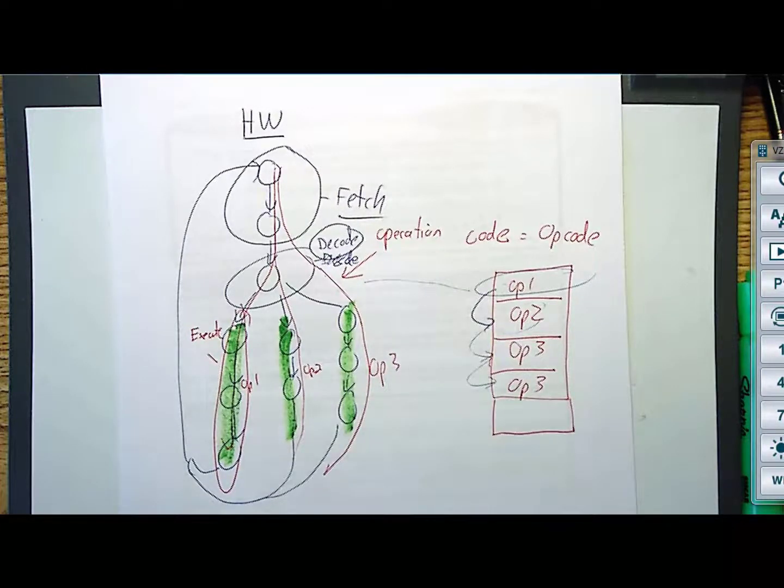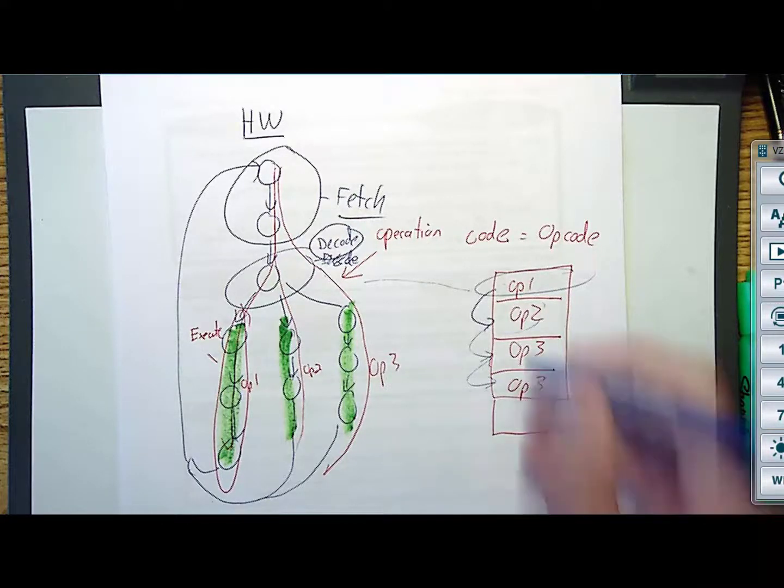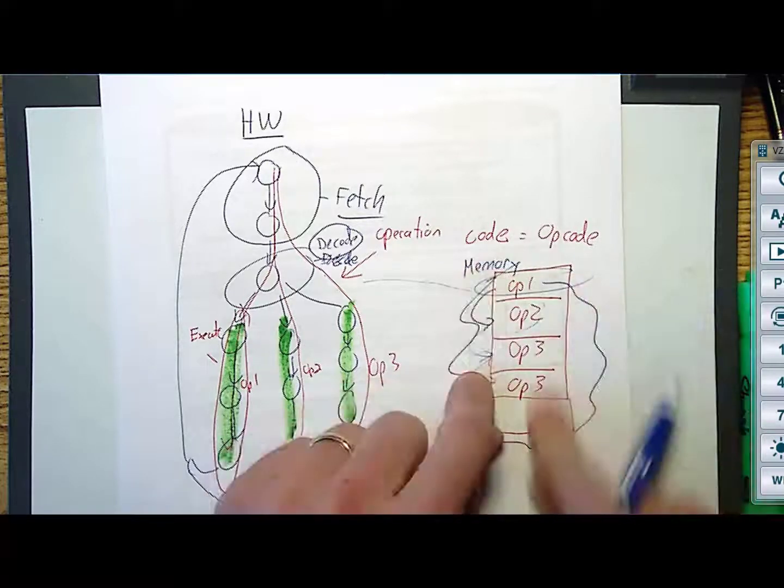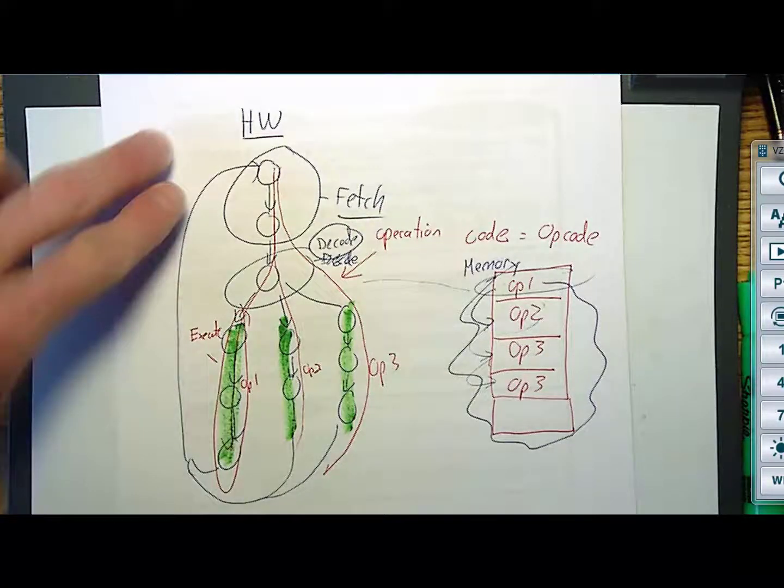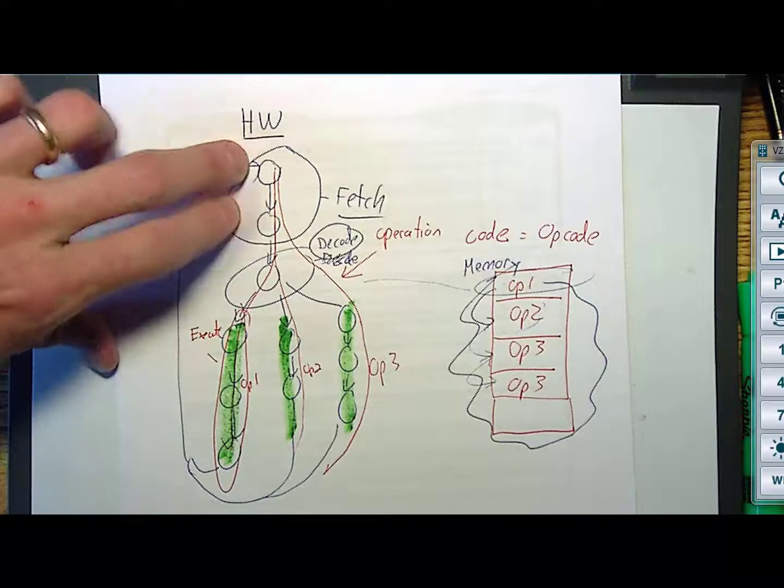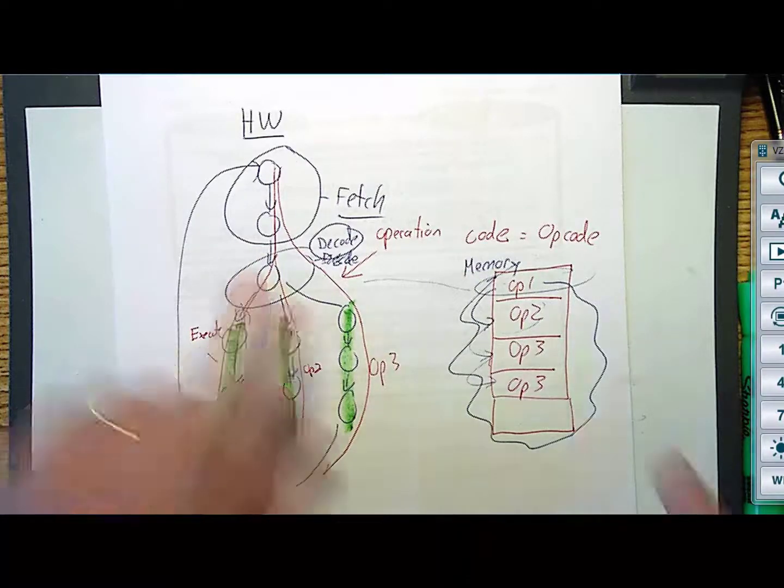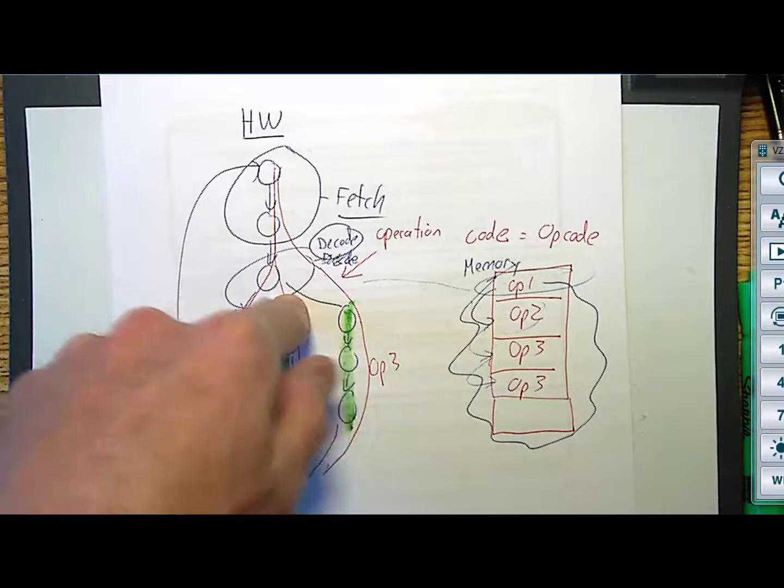We could put all of these codes into a memory system. Wouldn't that be cool? So, we could actually take this and put it into memory. And it's not just memory. It's program memory. This is where we're going to put essentially what we call the program. But all those opcodes sit in a memory system, and this fetch component of the finite state machine knows how to go out to the memory, grab the opcode, bring it over, and decode it.